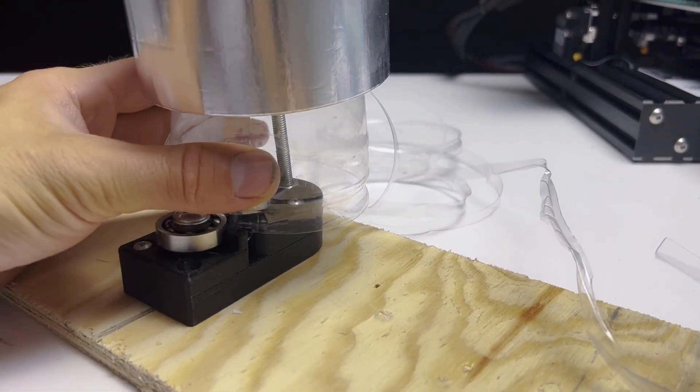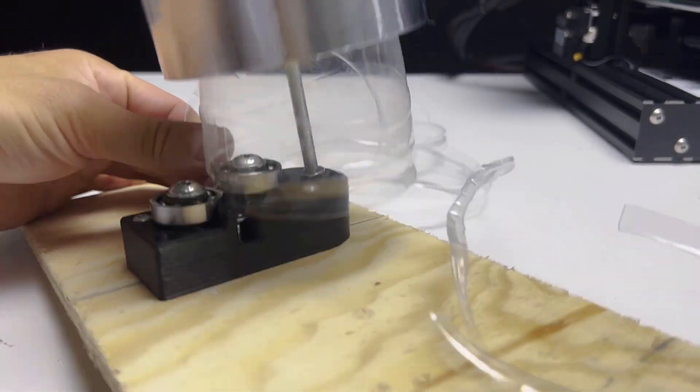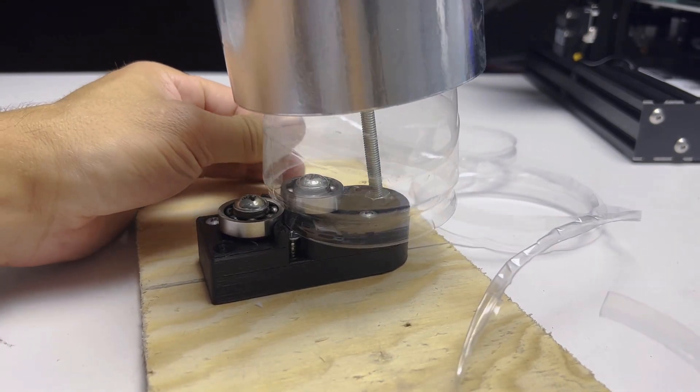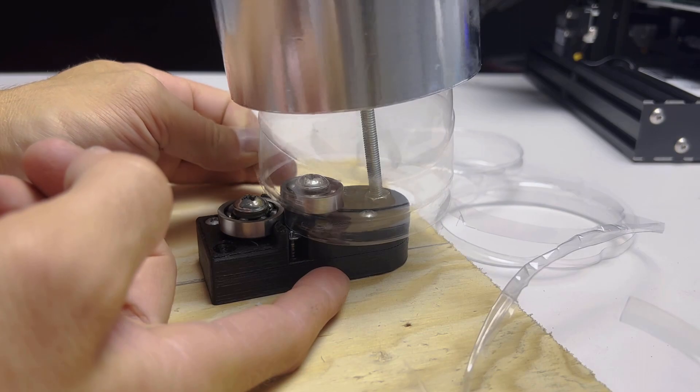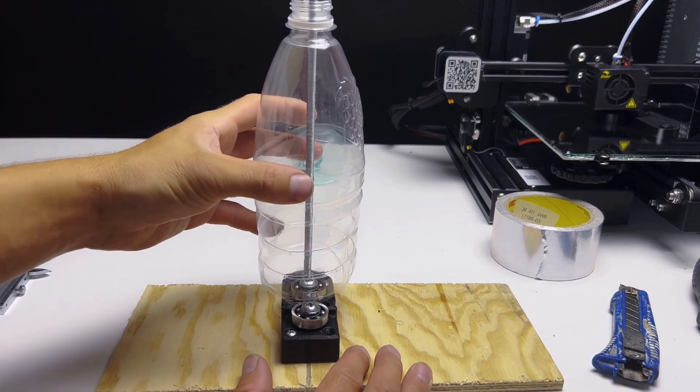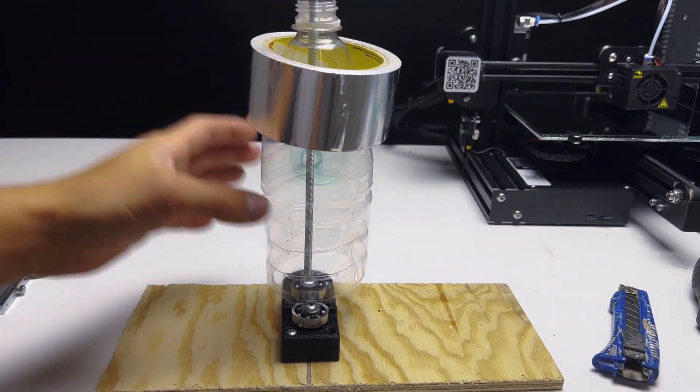Another problem I encountered is that the bottle twists at the bottom under the weight of the load. Possibly reducing the weight could solve this, but it might decrease the pressure on the screw and affect the thickness. Regardless, further testing is necessary to find the ideal weight.